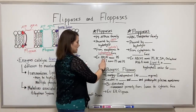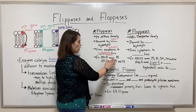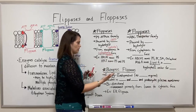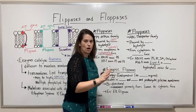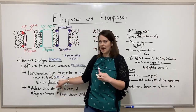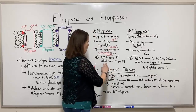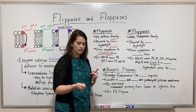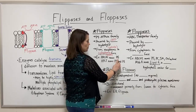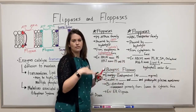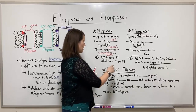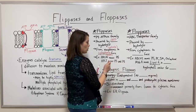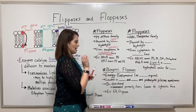Here are some examples of flipases. ABCA4 moves phosphatidylethanolamine (PE) — that's a specific phospholipid — so it's an example of a highly specific flipase. Another example is APLT, which moves both phosphatidylserine (PS) and phosphatidylethanolamine (PE).